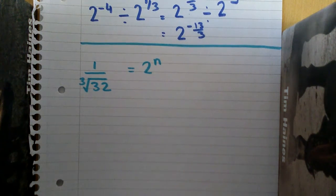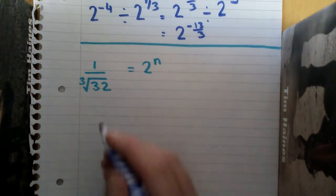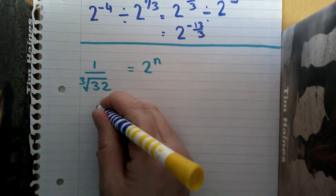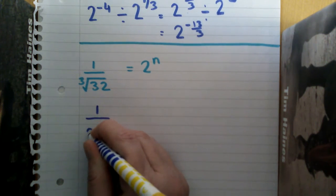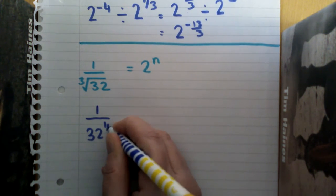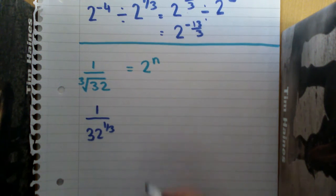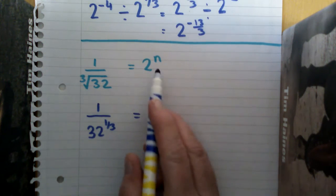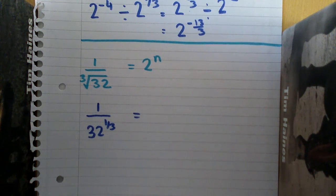The second type of example is a little bit the same. We have to work on different things separately. Let's think about getting rid of that root. The root becomes 1 third because it's the cube root, so I can start off by writing 1 over 32 to the power 1 third, and that's still equal to my 2 to the n.